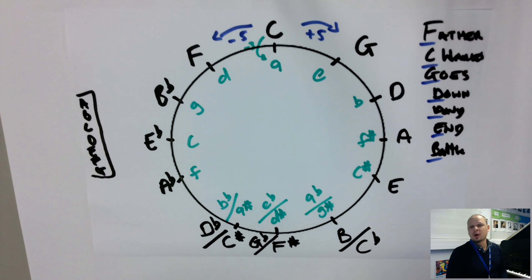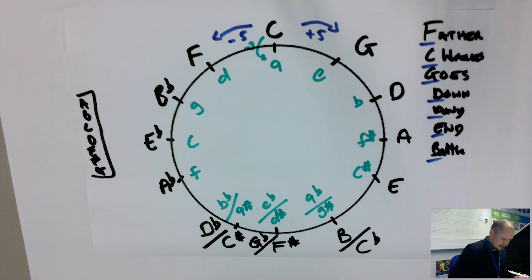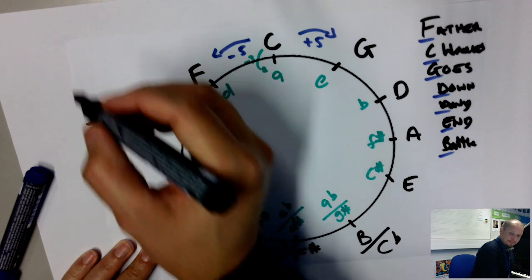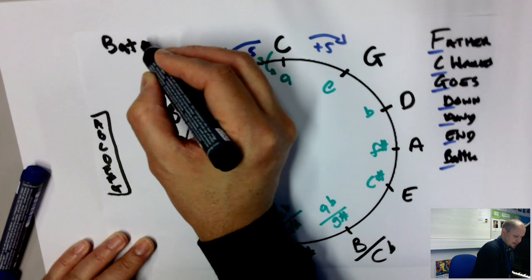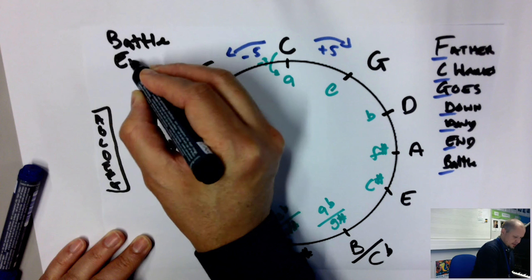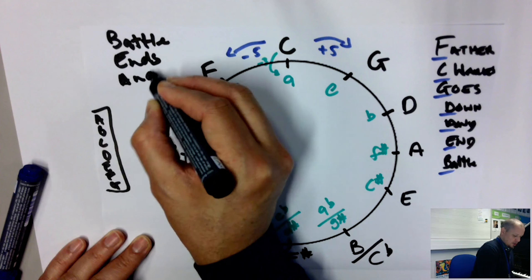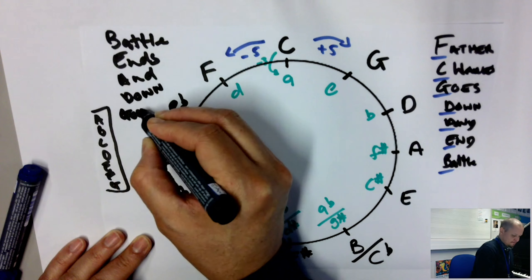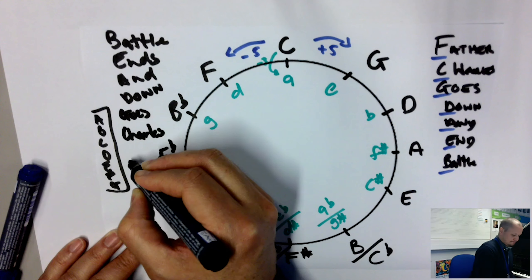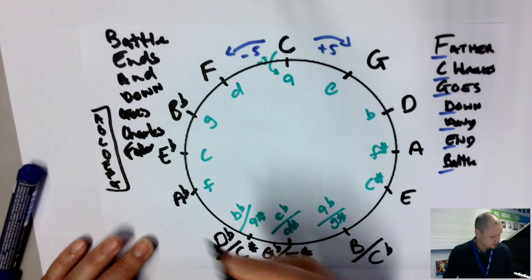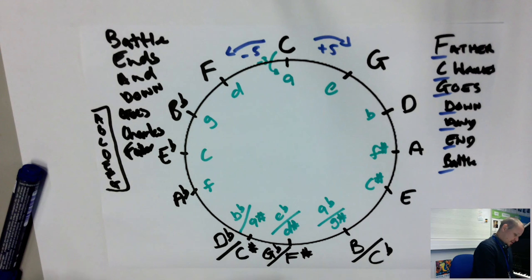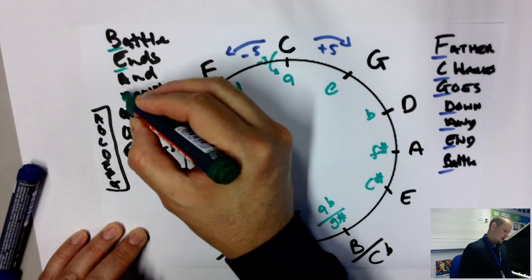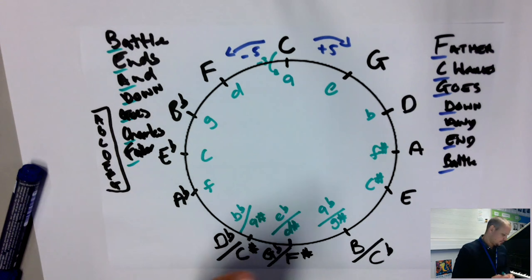Reversing 'Father Charles' gives us 'Battle Ends And Down Goes Charles's Father' — that is the order of our flats: B, E, A, D, G, C, F. So we just reverse that to know our order of flats.